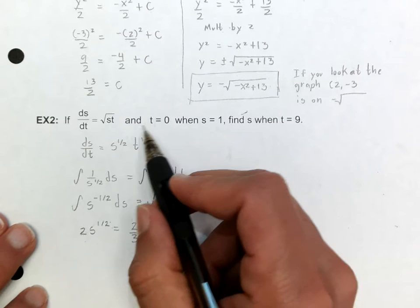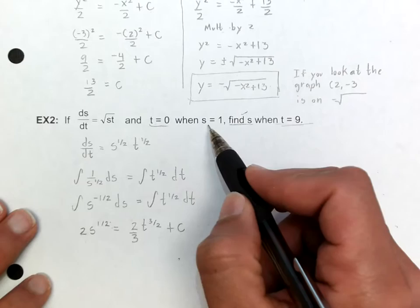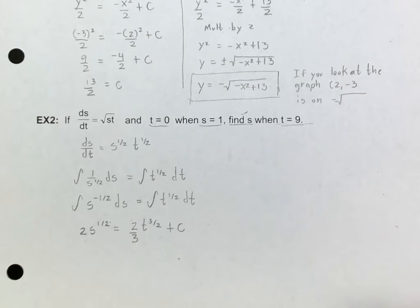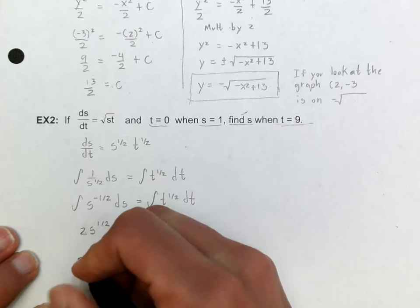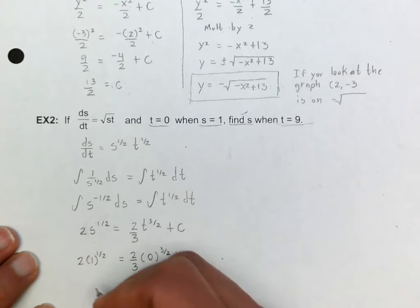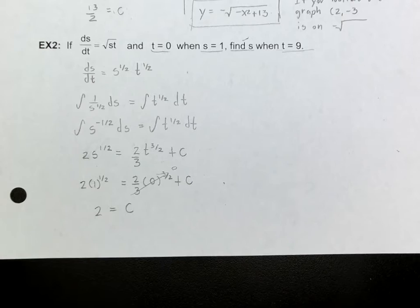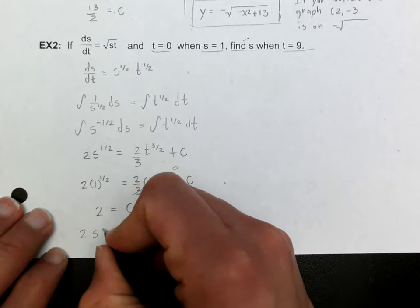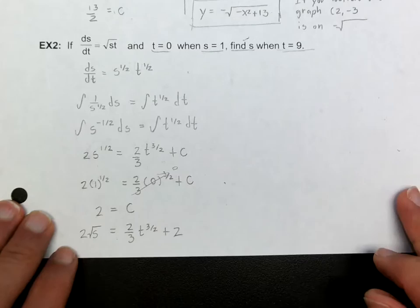This problem asks us to find s when t is nine, but first we need to find c. We'll use the initial condition by plugging in 1 for s and 0 for t. The right side becomes 0 and the left side becomes 2, so c is equal to 2. My equation is therefore 2 square roots of s equals two-thirds t to the three-halves plus 2.